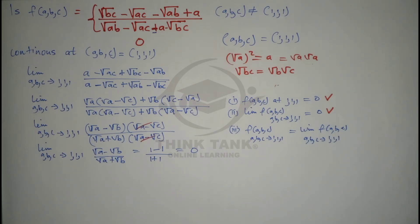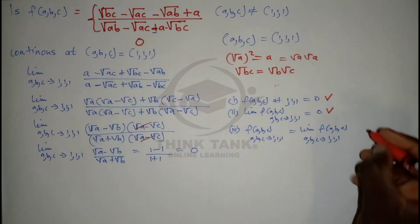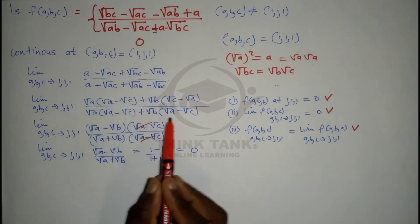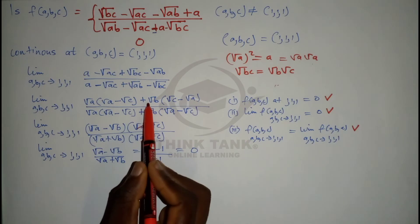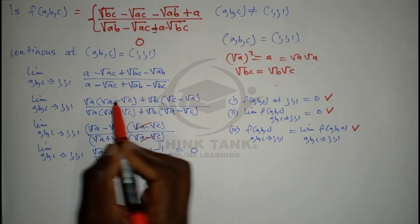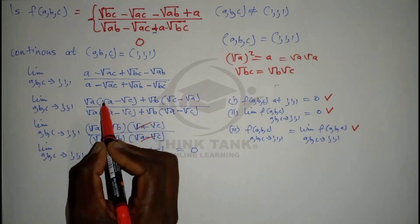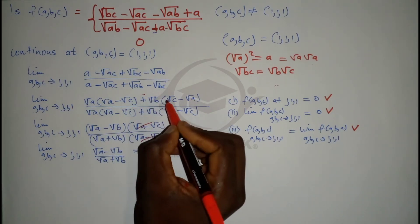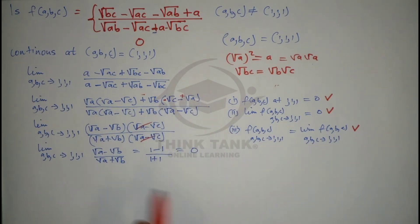The limit at this point is zero, and the function is defined at zero — both match, so the third condition is satisfied. We can safely say this function is continuous at this point. For those confused about the sign step: notice that c is negative in one group and positive in the other, and a is positive in one and negative in the other. By factoring out a negative, the terms align, making those groups identical and allowing cancellation. Don't forget to subscribe — see you next time!